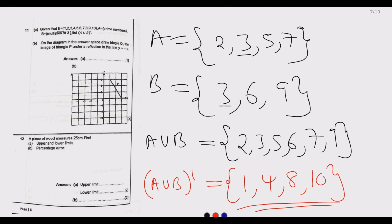Part B of question 11 asks us: on the diagram in the answer space, draw triangle Q, the image of triangle P under the reflection in the line y equals negative x.